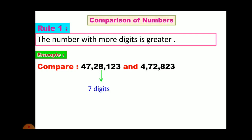we have 7 digits and the second number carries 6 digits only. So, a 7-digit number is greater than a 6-digit number. That's why 47,28,123 is greater than 4,72,823.